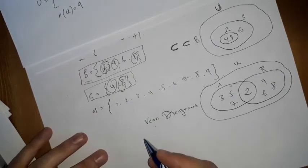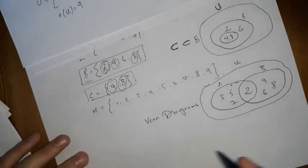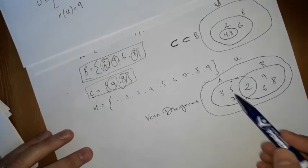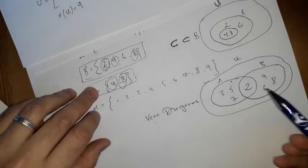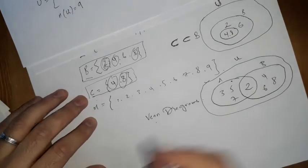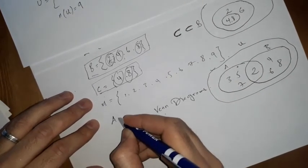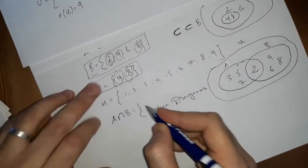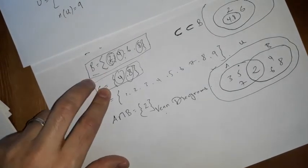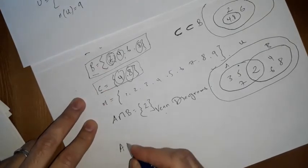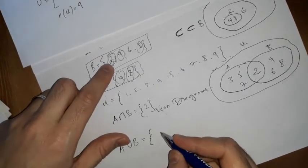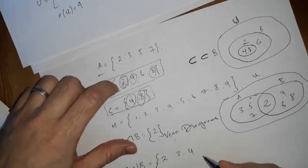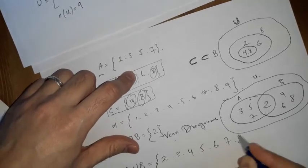The union of two sets A and B, written A ∪ B, includes all the numbers from both sets. We don't repeat numbers — each is listed only once. So A ∩ B = {2}, and A ∪ B = {2, 3, 4, 5, 6, 7, 8}.